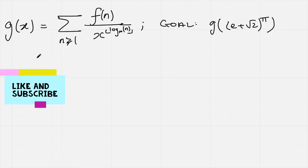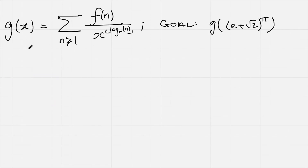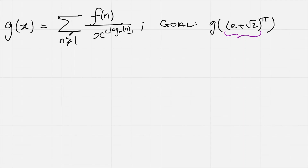We're going to start our solution by rewriting the problem in shorthand. We're going to let g of x be the sum from n equals 1 to infinity of f of n divided by x to the power of the floor of log base 10 of n. Our goal is to work out what g evaluated at e plus root 2 to the power of pi is — just swapping x with that number. There is an important property about this number which means we can actually work out the sum, but we'll come back to that property at the end.